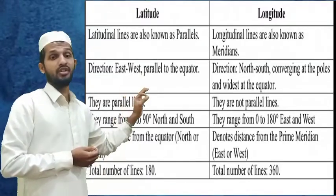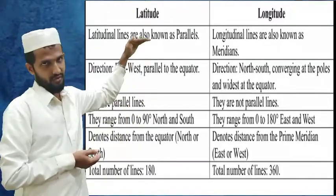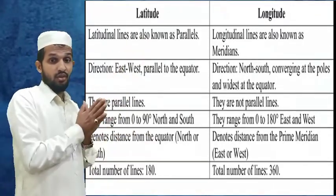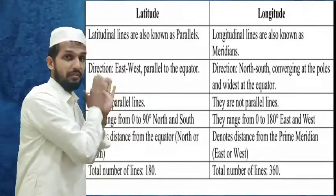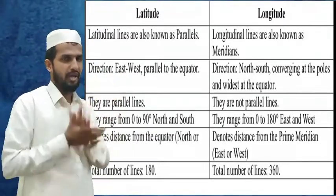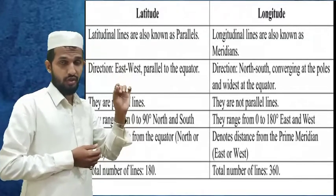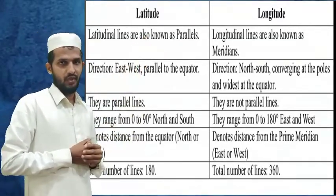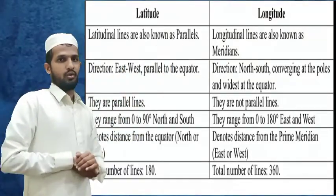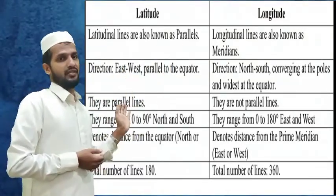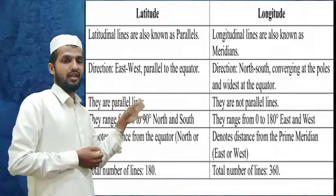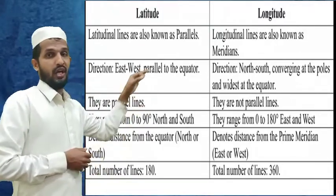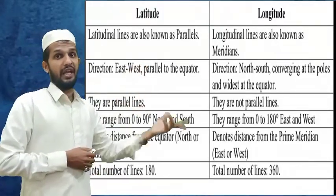Latitude denotes the distance from the equator — how far from the equator to north and to south. Longitude denotes the distance from the prime meridian. The prime meridian, the zero point of longitude, is located in Greenwich, London, UK — from there longitude starts. The number of latitude lines is 180, but longitude lines number 360, which is almost double.